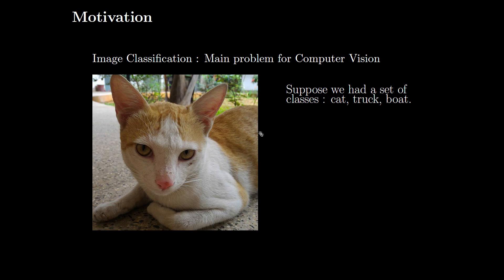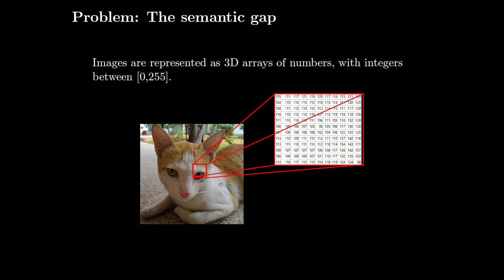If a human is shown the following image, we will immediately identify this to be a cat. On the other hand, if the same image is fed into a computer, the computer identifies this image as a 3D array of numbers with integers between 0 to 255. Here 3D because we are giving an RGB image of 3 channels; therefore, each pixel will have 3 values.